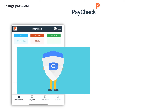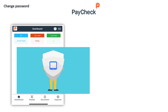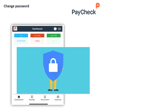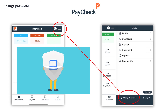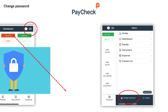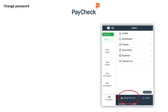If you wish to change any personal details, select the menu option button in the top right. On this page you have options from changing your password to editing your personal information, alongside viewing all pay documentation. To change your password, select the change password option at the bottom. You will then be asked to input your current and then your new password.